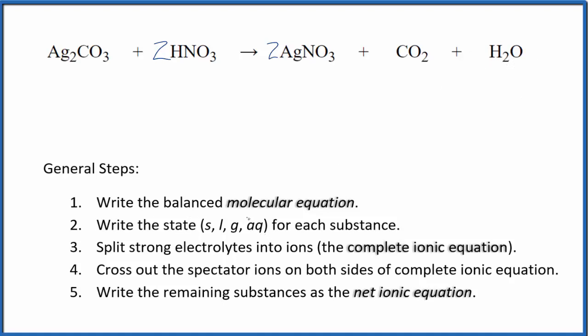So now we can write the state for each substance. If you know your solubility rules, carbonates are insoluble most of the time, and silver compounds often insoluble. So this is going to be a solid. We'll start out with solid silver carbonate.